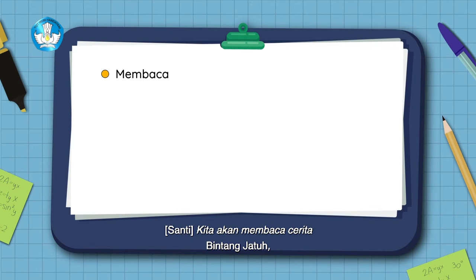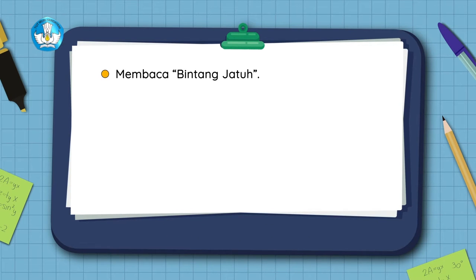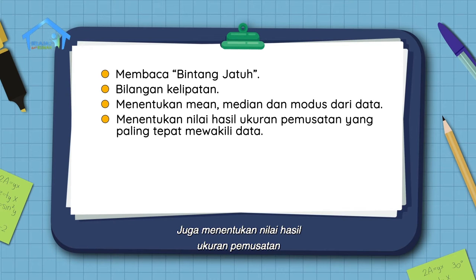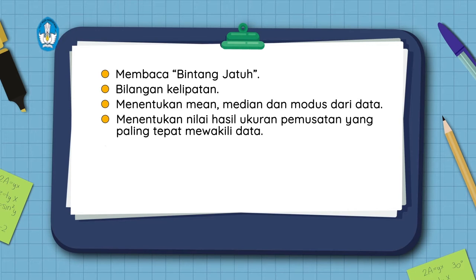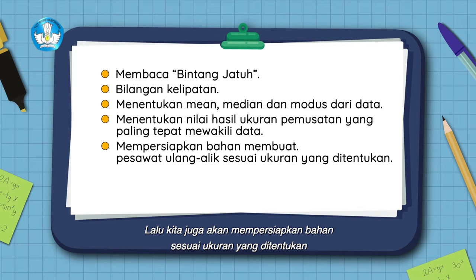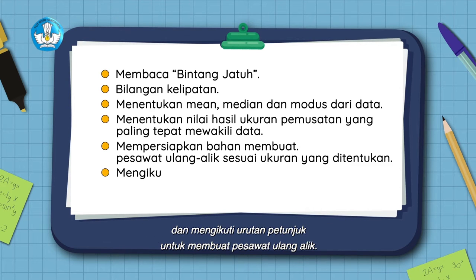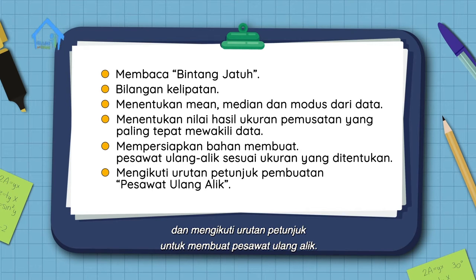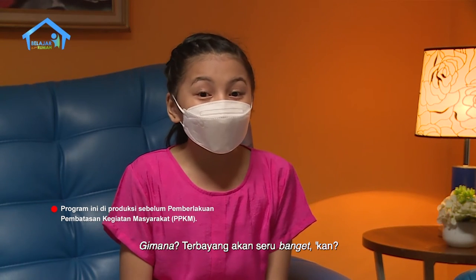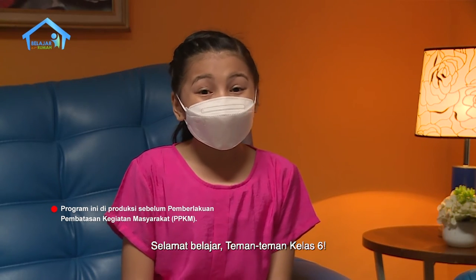Kita akan membaca cerita bintang jatuh, mempelajari bilangan kelipatan, menentukan min, median, dan modus dari data. Juga menentukan nilai hasil ukuran pemusatan yang paling tepat mewakili data. Lalu kita juga akan mempersiapkan bahan sesuai ukuran yang ditentukan dan mengikuti urutan petunjuk untuk membuat pesawat ulang alik. Gimana? Terbayang akan seru banget kan? Selamat belajar teman-teman kelas 6.